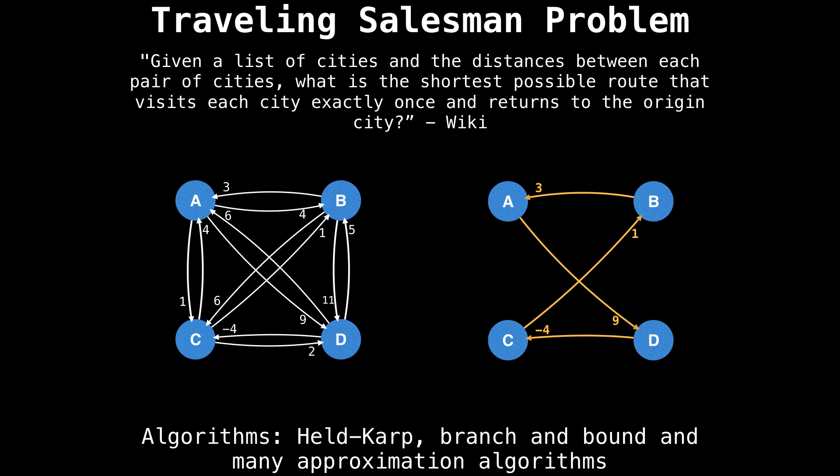For example, if your graph is the one on the left, a possible TSP solution is the graph on the right, which has a cost of nine.